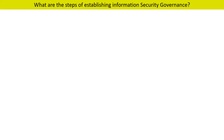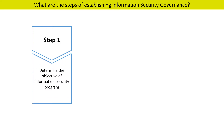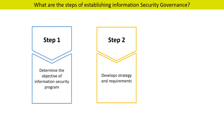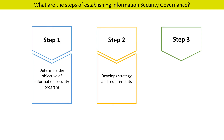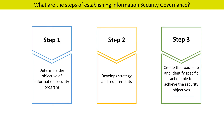Let us now discuss what are the steps for stabilizing information security governance. Basically, there are three steps. The first step is to determine what is the objective of the information security program. Once your objective is ready, the second step is to develop the strategy and requirements to meet the objective. The third step is to create the roadmap and identify specific actionables to achieve the security objective.